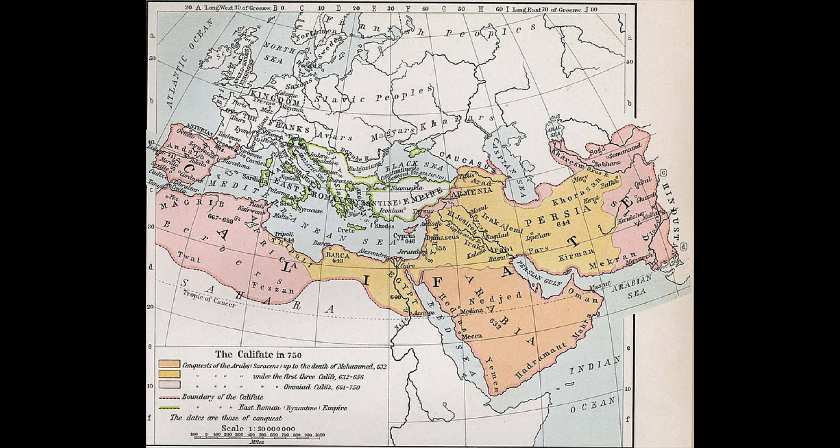However, the Umayyad Caliphate was not without its challenges. The Umayyads were accused of favoring the rights of old Arab families over newly converted Muslims. They also transformed the caliphate from a religious institution to a dynastic one, leading to a negative reception from later Islamic historians. Despite these challenges, the Umayyad Caliphate was a major force in the development of Islam. The Umayyads spread Arabic and Islamic law throughout their empire and helped create a unified Islamic culture. The Umayyad Caliphate is an important part of the history of Islam, and its legacy continues to be felt today.